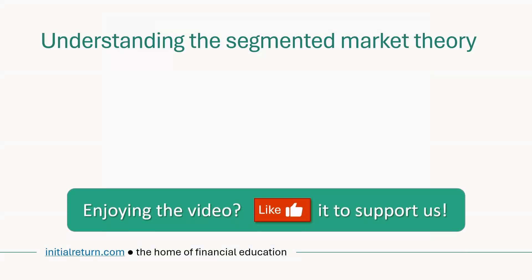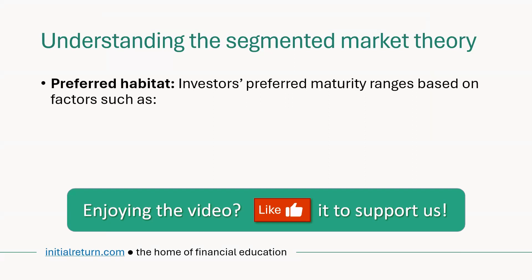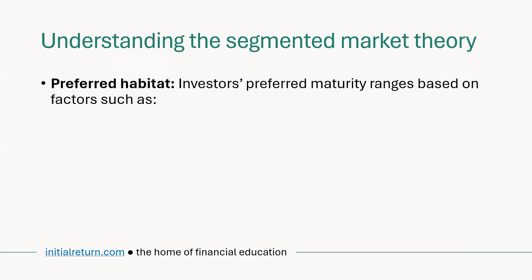Now let's go a bit further with additional details. This idea of segmentation comes from investors' preferred habitats — meaning investors have their preferred maturity ranges, which can be driven by different factors. For example, it can be primarily driven by their investment horizon. Mature people towards the end of their lives may naturally have a more short-term horizon and want to invest in short-term bonds.